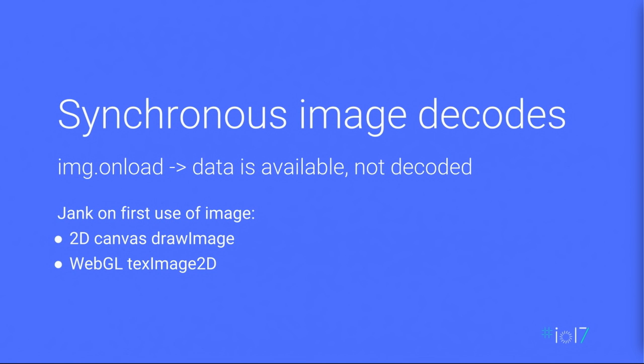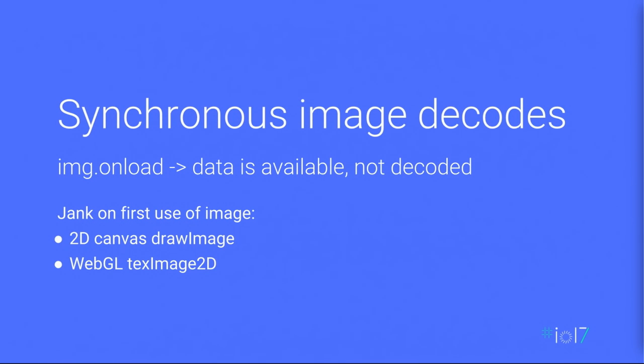The first topic: synchronous image decodes. The current practice when we load an image asset is to start using it as soon as we get the signal that the image resource is loaded — using the onload handler. Onload guarantees that using the image will work, but it does not guarantee it's going to be fast. The first time we use an image resource, there's usually a delay due to decode overhead, which can cause jank, especially if we start loading images in the middle of an animation. Examples include the first draw to a 2D canvas using drawImage, and a texture upload to WebGL using texImage2D.